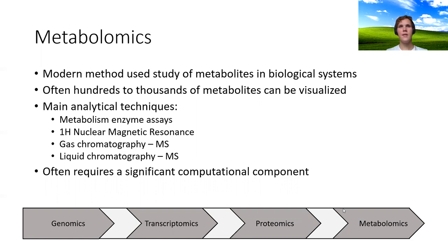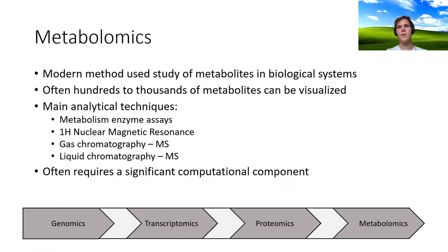Looking at this figure, I've tried to show the progress of omics as it goes from genomics, which is the genome of a biological system, to transcriptomics, which is the RNA generated from those genes. Past transcriptomics we have proteomics, which is the proteins created from those transcripts. And finally we have metabolomics, which is the metabolites catalyzed by those proteins. Metabolomics is often called the endpoint of omics for this reason.